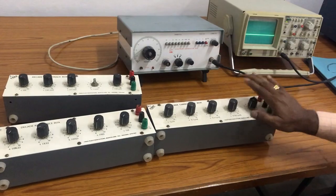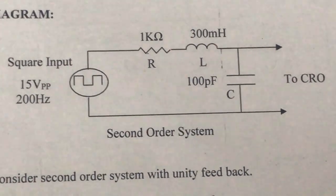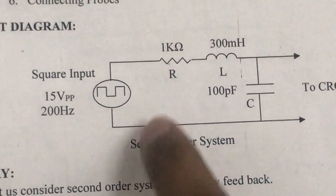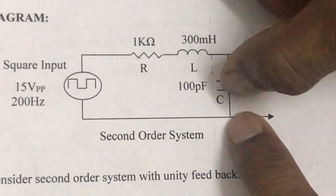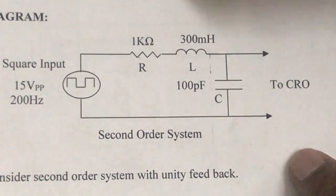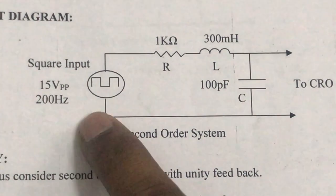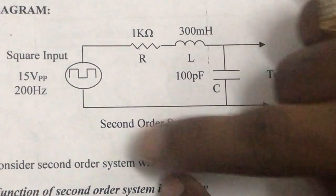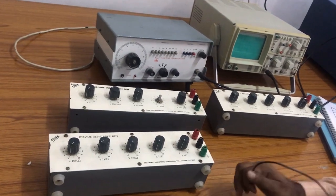Coming to the circuit diagram and connections: this is the circuit diagram, which is the series combination of RLC. These three elements are connected in series and supplied by a 15 volt peak-to-peak voltage at 200 Hz frequency. The type of input is a square wave input.